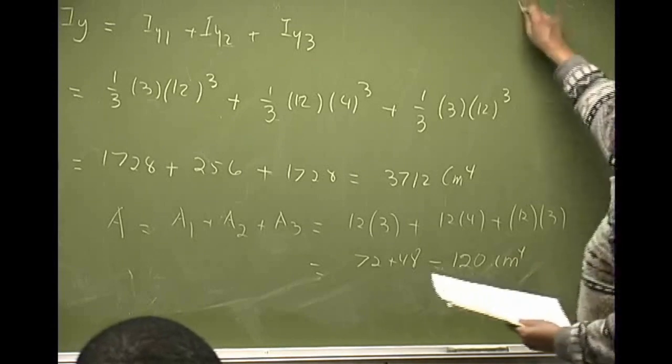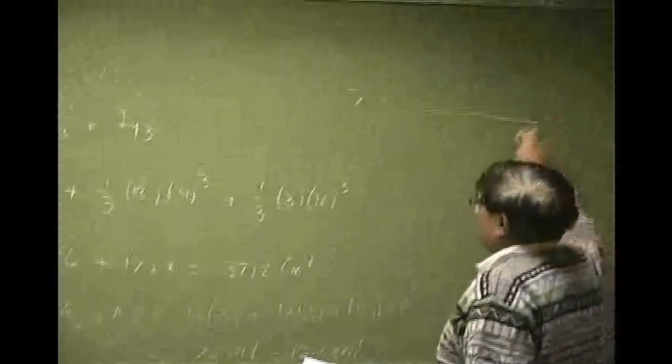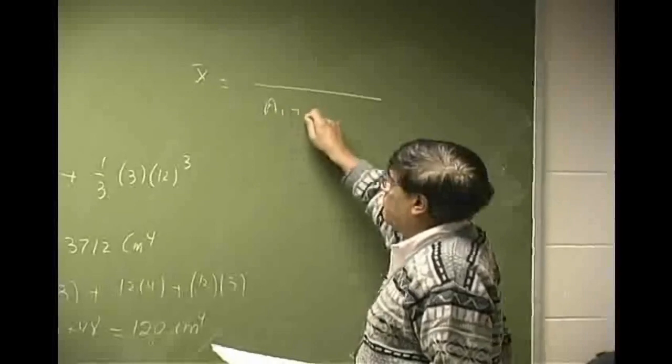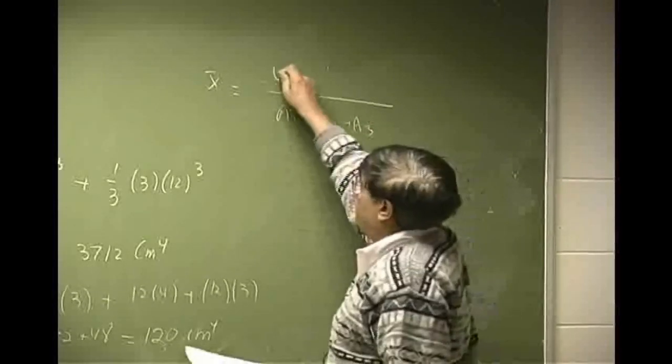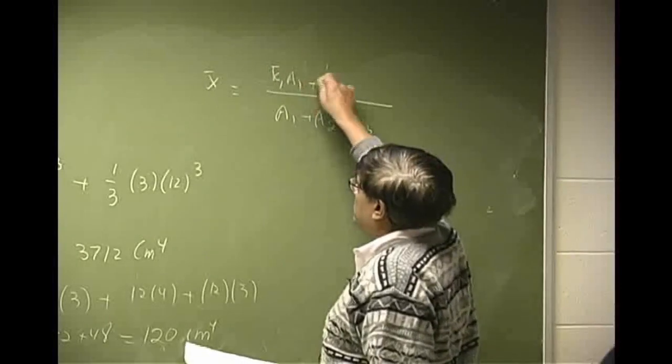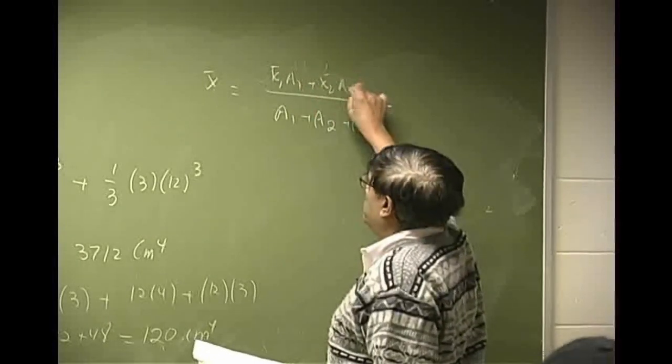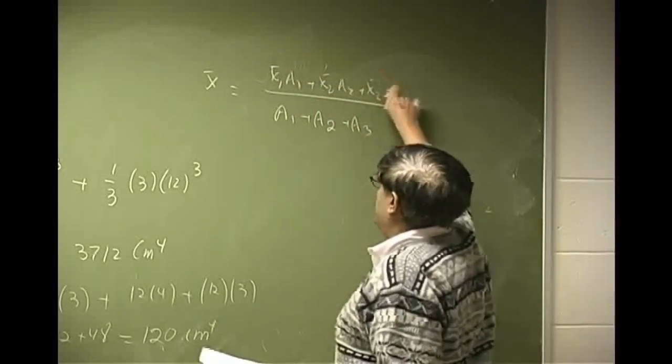We need x̄ for the case. x̄ is going to be A1, A2, A3 all right, up x̄1A1, x̄2A2, x̄3A3.